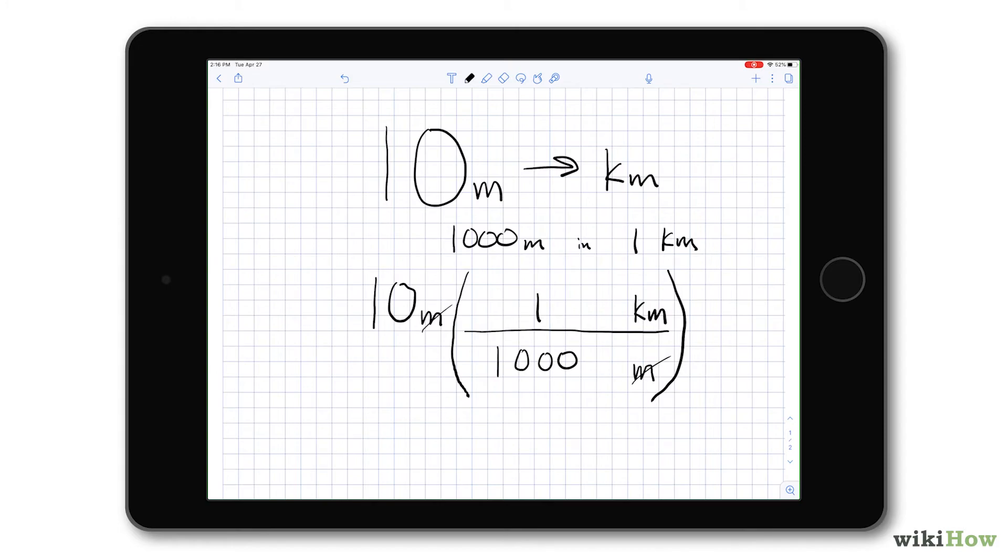The most common mistake that students make is to multiply when they should divide or divide when they should multiply. And this method ensures that you prevent that.